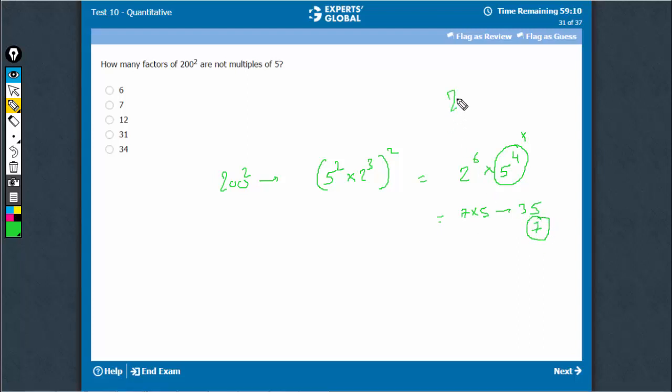2 raised to power 6. So, 2 raised to power 1, 2 raised to power 2 until 2 raised to power 6 and 2 raised to power 0. These 7 are the only ones which are not multiples of 5 and if any of these into 5, any power of 5 will make it a multiple of 5. Answer is 7.